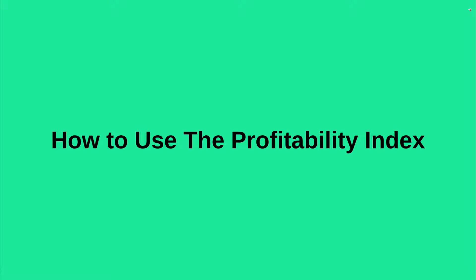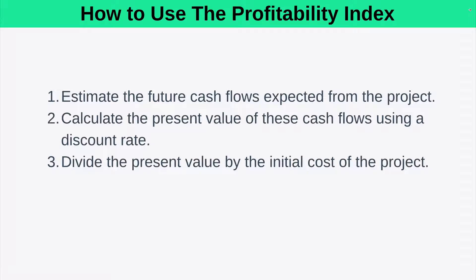Let's take a look at how you use the Profitability Index. There are three steps to follow. First, you estimate the future cash flows expected from the project. Secondly, you calculate the present value of each of these cash flows using a discount rate. And finally, you divide the present value by the initial cost of the project. A profitability index greater than one indicates a potentially profitable investment, suggesting that the project's returns exceed its cost. Conversely, a profitability index less than one means the project's cost outweighs its benefits, and it might be wise to reconsider the investment.